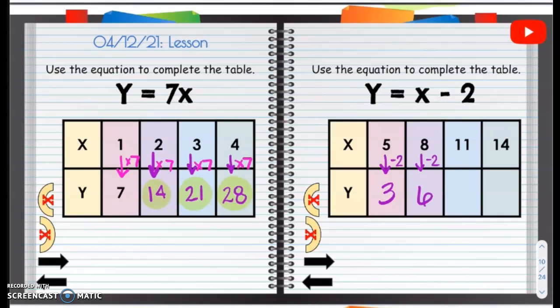11 minus 2, 11, 10, 9. 14 minus 2, 14, 13, 12. So your values here will be 3, 6, 9, and 12.